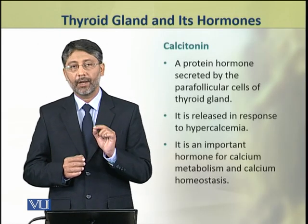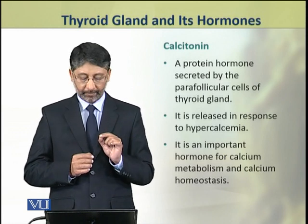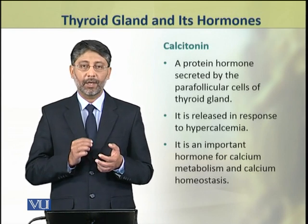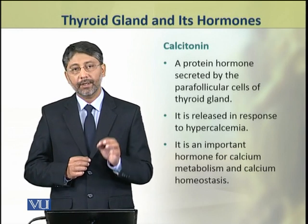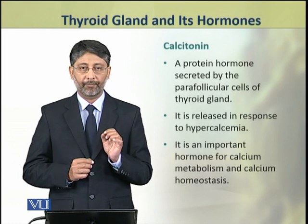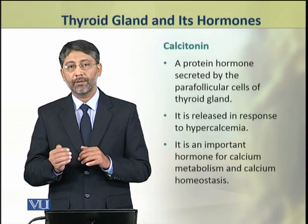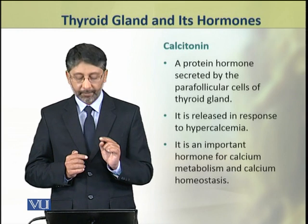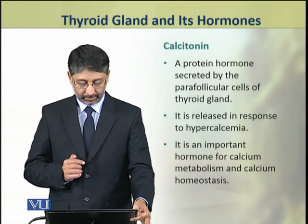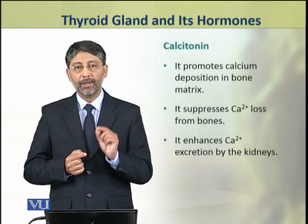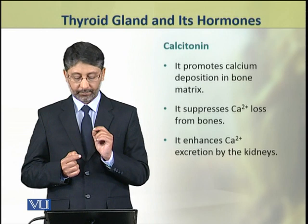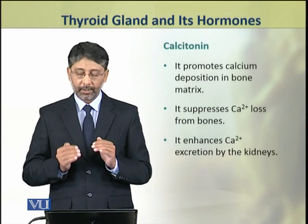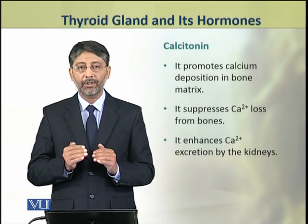Now we shall discuss the second hormone of the thyroid gland: calcitonin. Calcitonin is a protein hormone secreted by the parafollicular cells of the thyroid. It is released in response to hypercalcemia, that is, high levels of blood calcium. It is an important hormone for calcium metabolism and calcium homeostasis. Calcitonin promotes calcium deposition in the bone matrix, suppresses calcium ion loss from bones, and enhances calcium ion excretion from the kidneys.